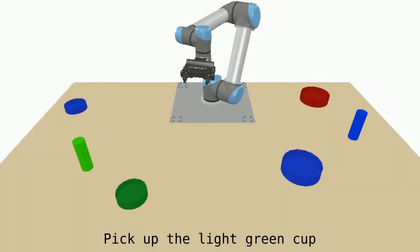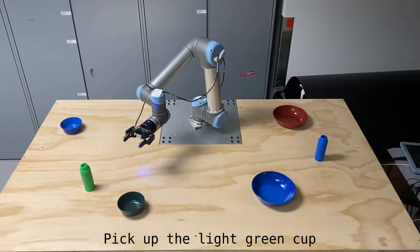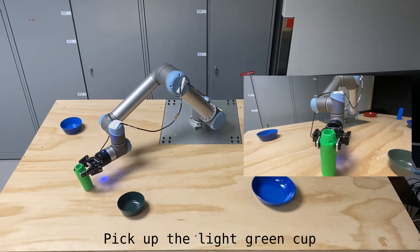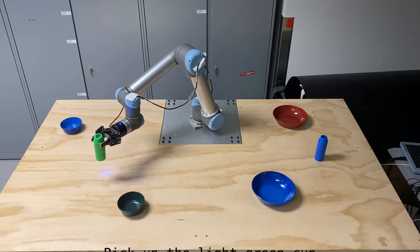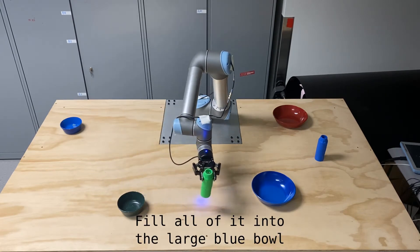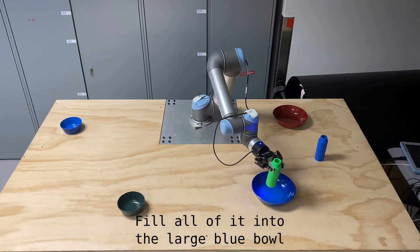The generated control policy is then applied on the robot, either in simulation or the real world, in order to execute the human instruction. Our approach treats motion generation as a translation process. Vision and language information is used as input to translate to the robot policy domain.